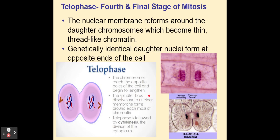The next stage is telophase. The sister chromatids — now called chromosomes — are on opposite sides of the cell, and the nuclear membrane will begin to reform around them. Those chromosomes start to become thin thread-like chromatin again. Each of the two daughter cells will be genetically identical, and those daughter nuclei will be identical to each other. By the time telophase is happening, the last step — cytokinesis — is also occurring simultaneously.